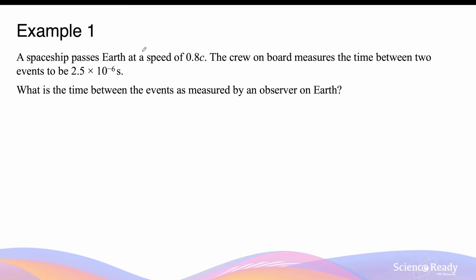A spaceship passes Earth at a speed of 0.8c, so 80% of the speed of light. The crew on board measures the time between two events to be 2.5 times 10 to the minus 6 seconds. What is the time between the two events as measured by an observer on Earth?